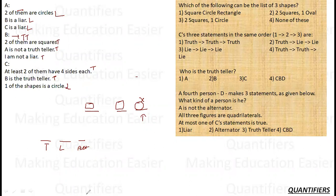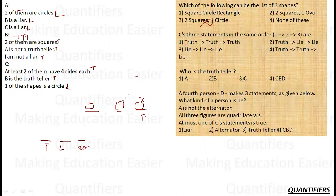Now let's look at the questions. First: which of the following can be the list of three shapes? We know there must be two squares. The third shape cannot be a circle. So two squares and one oval is the right answer.